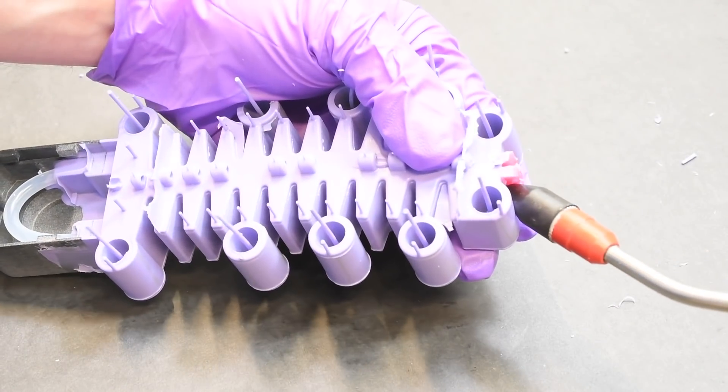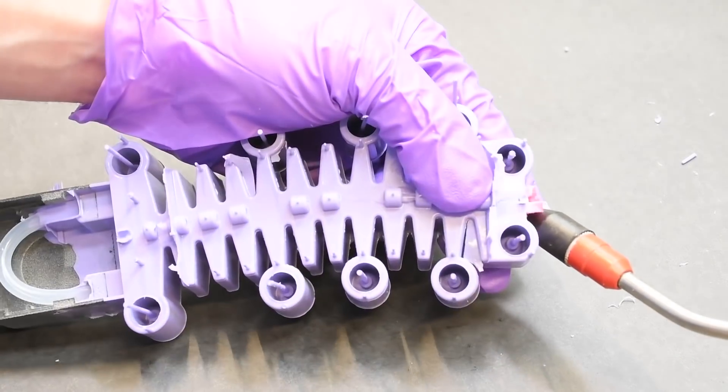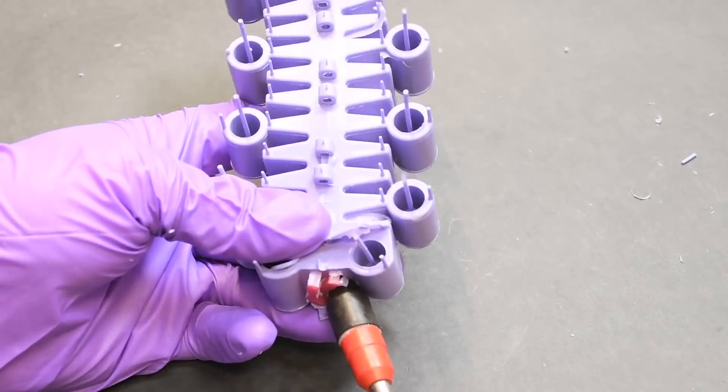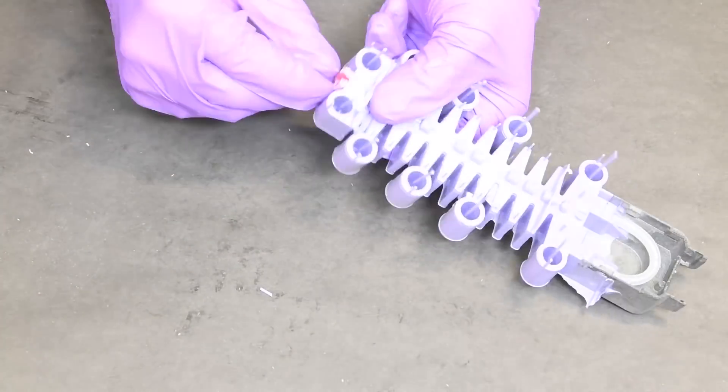We start by blowing air through the soft core so that we can get the bellows a little bit inflated, which separates the soft core from the desired part.